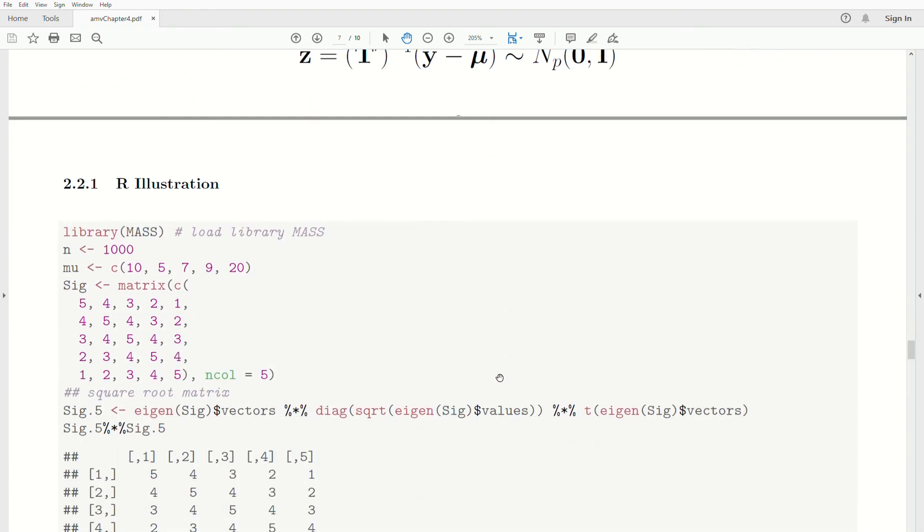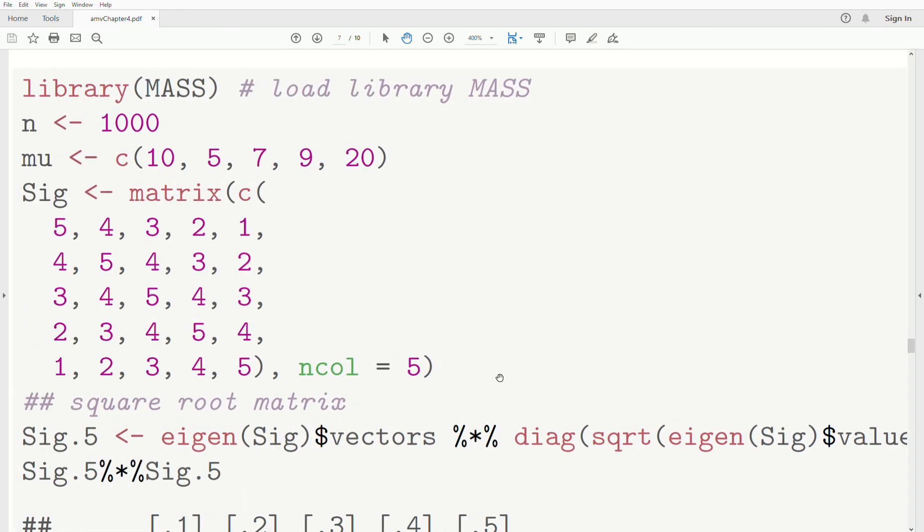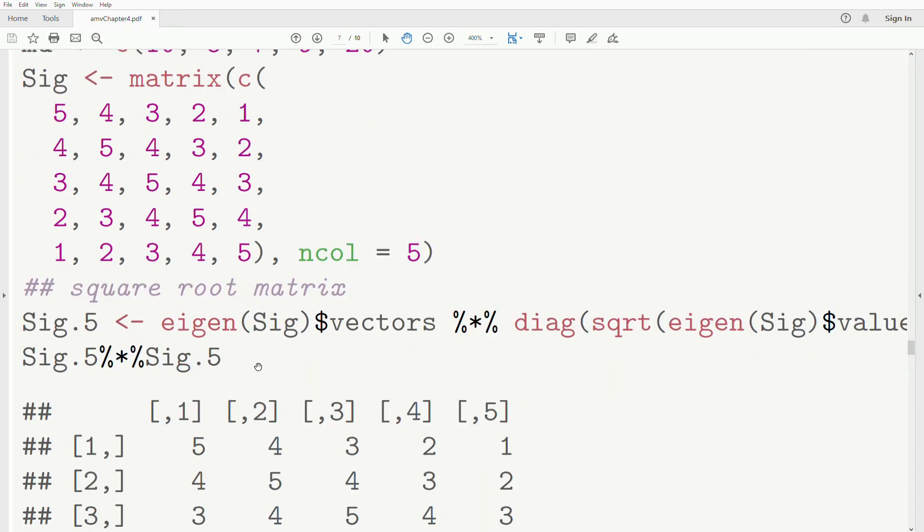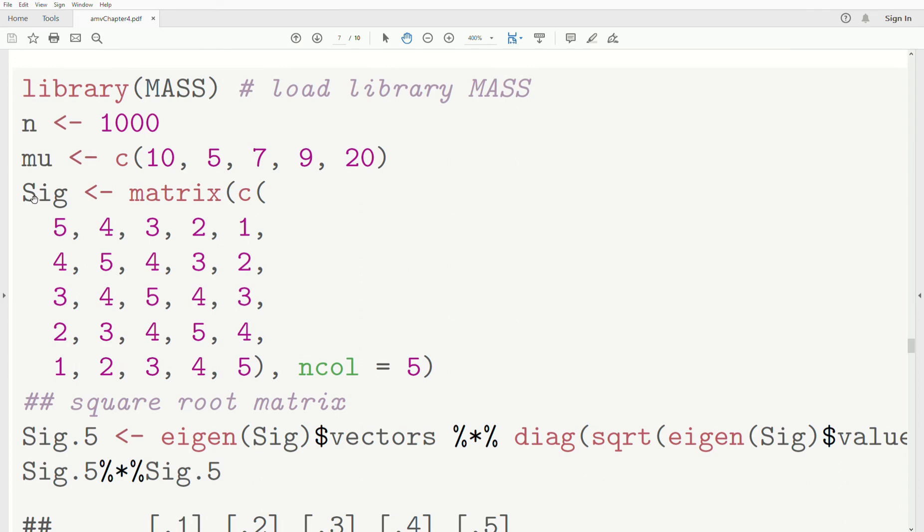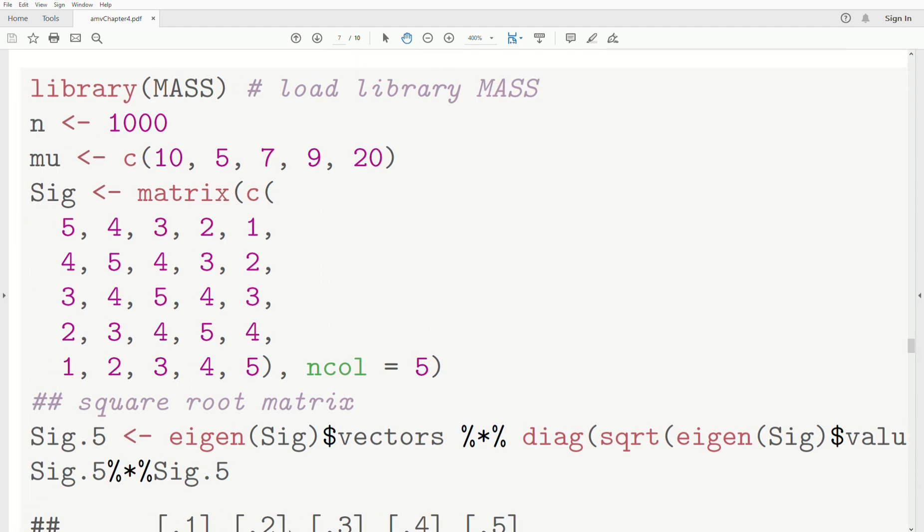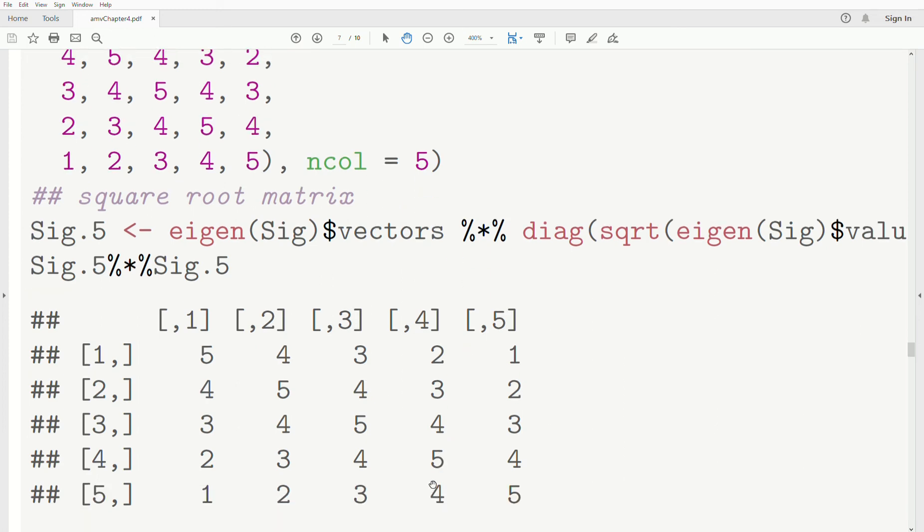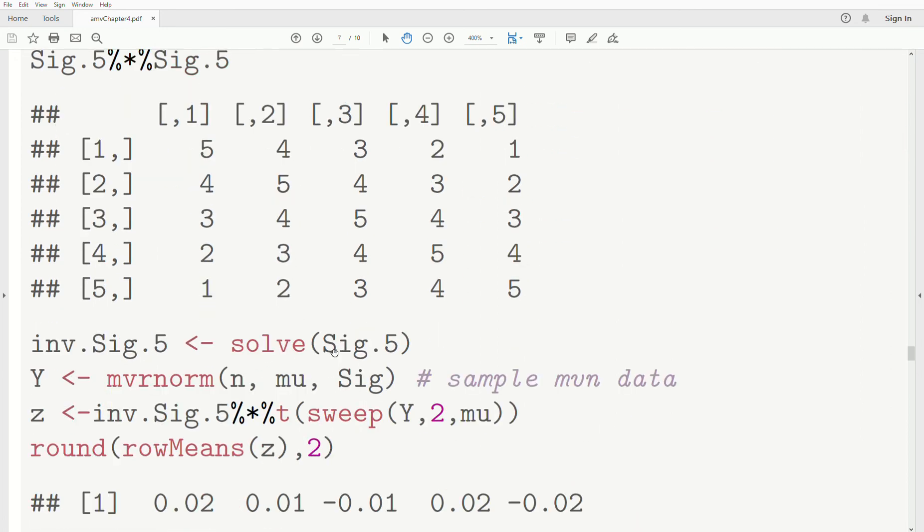Now let's look at a quick illustration and call it quits for today. We're going to use the library mass again. We have this variance-covariance matrix sigma, and we're going to create a square root matrix from it with this command. And to show that it is a square root matrix, we take it times itself, and notice that we get the variance-covariance matrix back. So it is a square root matrix.